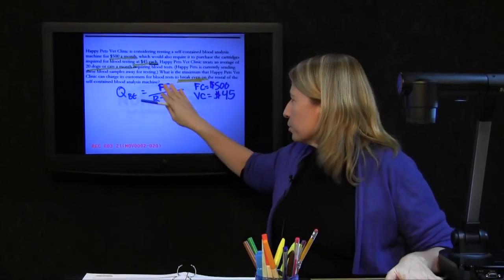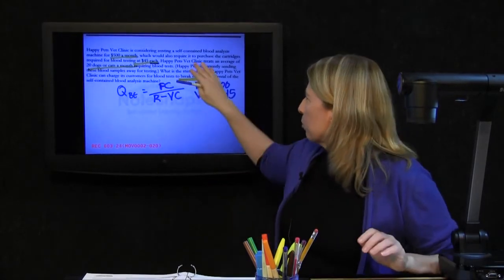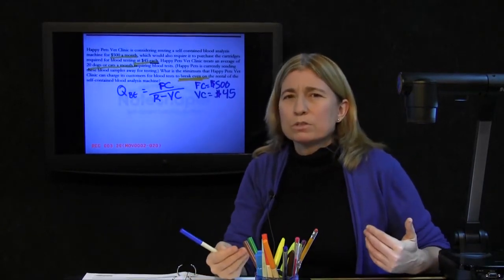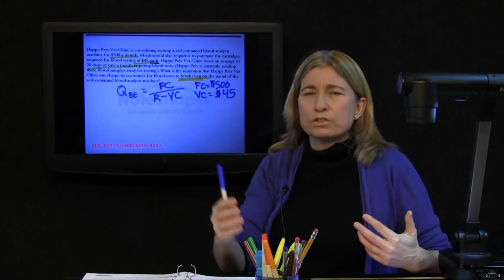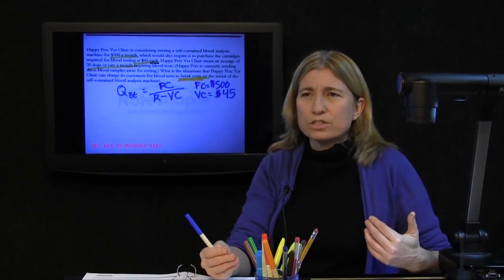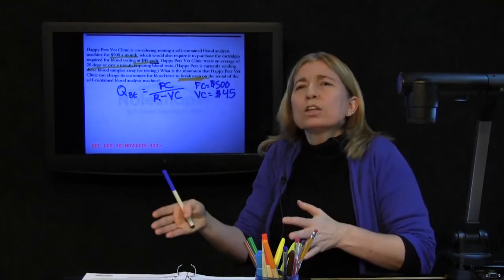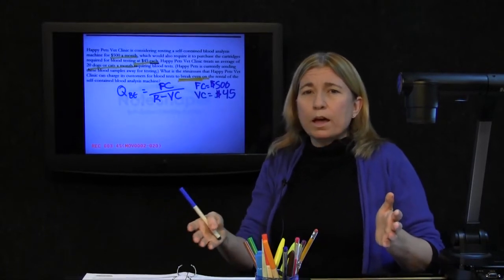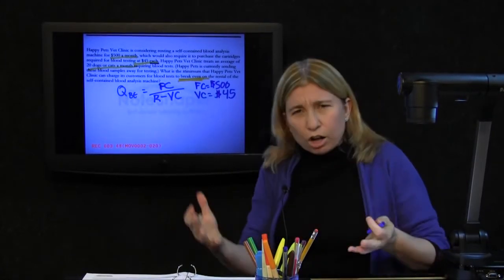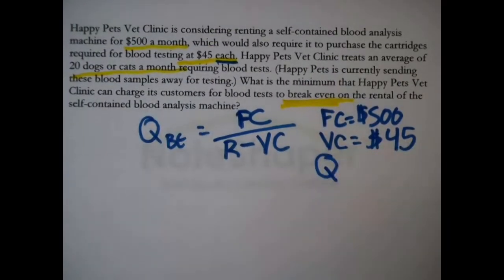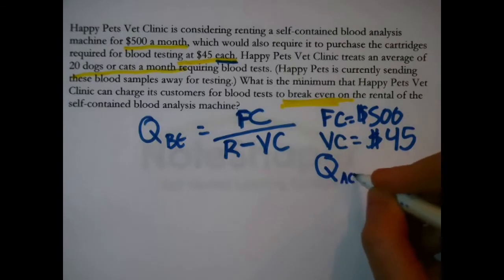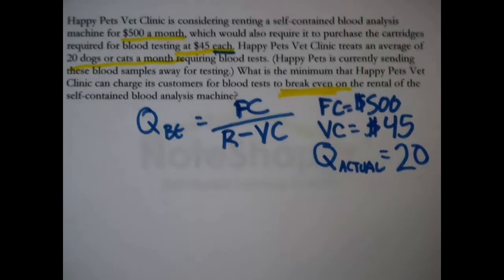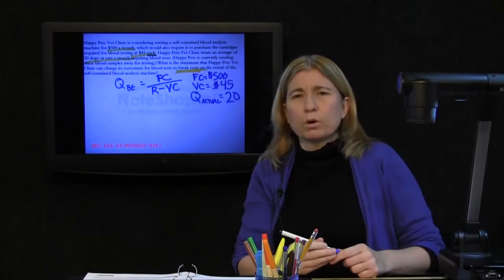Now, it looks like we're closing in on just filling out this formula the way that we usually do. We run across, and that's what kind of tripped me up there for a moment. We run across an amount. It says that they currently treat 20 dogs or cats that require tests. Their current volume is 20 per month in terms of these blood analyses. Wait, their current volume, how much? That's a Q. It's Q for quantity. We could say, just so that we don't confuse it with QBE here, it's Q actual. Their actual quantity is 20 a month.